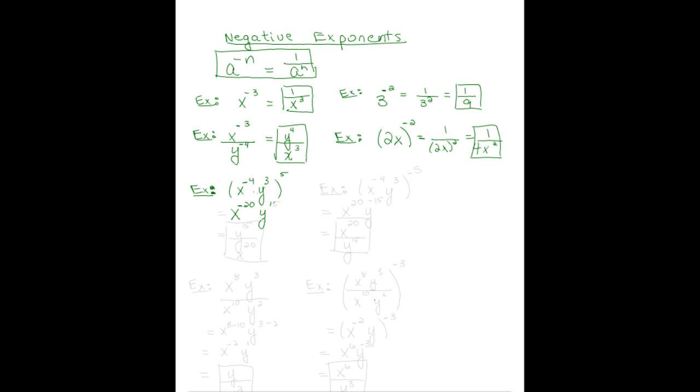These factors are written in the numerator, so we will drop the negative and bring it to the denominator, leaving y to the 15th over x to the 20th as our final answer.